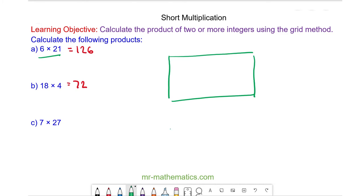For question c I'm going to break up 27 into its tens and units which is 20 and 7. So here we have 20 and here we have 7 with 7 going here.